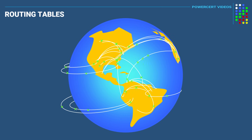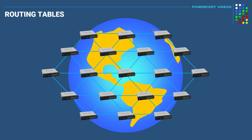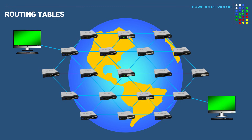Hello everyone. In this video we're going to be talking about routing tables. The internet is a giant highway of pathways for data to travel to their destination, and in between these pathways are devices called routers. Routers, just like its name says, routes data on the internet so that the data can reach its destination.